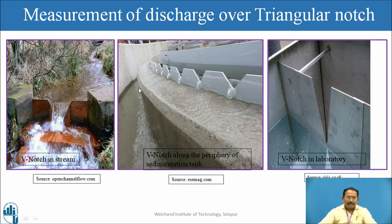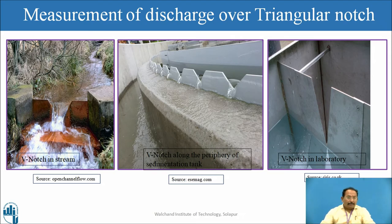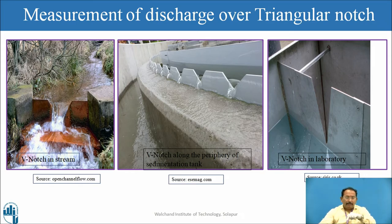Now come to the second picture. Here you can see a series of V notches. This is seen in the flocculation tank of the water purification plant — along the periphery of the tank such notches are located. You can find out the head over this notch, find out the discharge of one notch, and multiply with the number of notches to find the total discharge from that flocculation tank or sedimentation tank.